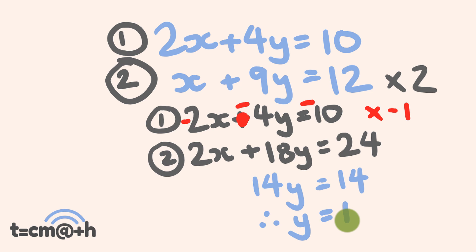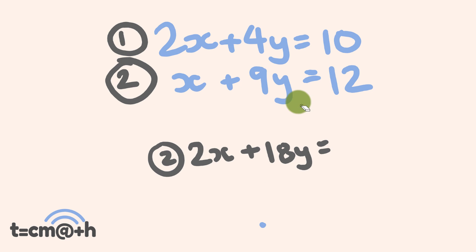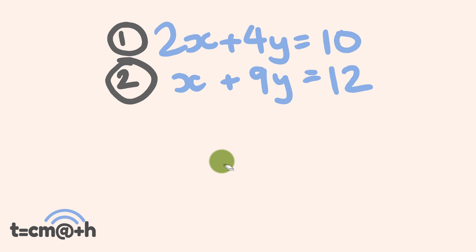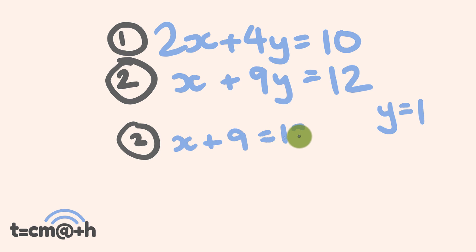So straight away we have our first solution — y is equal to 1. Obviously if you're in school you'll want to keep all that working so your teacher can see it. So we know y is equal to 1. Now what we do is substitute this value y equals 1 into one of these equations to solve for x. I think the easiest equation is equation 2. We have x — which we're trying to work out — and y is equal to 1, so 9 times y is equal to 9, and this is equal to 12. We take 9 off both sides and we end up with x is equal to 3, because 3 plus 9 is equal to 12.